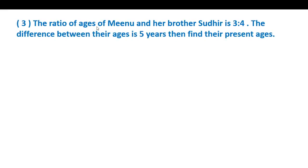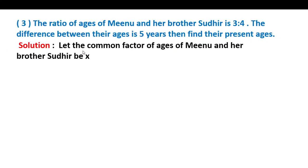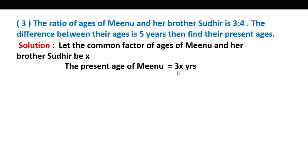Third example: The ratio of age of Minu and her brother Sudhir is 3 is to 4. The difference between their ages is 5 years, then find their present ages. The ratio of Minu and her brother Sudhir is 3 is to 4 and the difference is 5 years. Solution: Let the common factor of ages of Minu and her brother Sudhir be x. Therefore the present age of Minu is 3x years and the present age of Sudhir is 4x years.